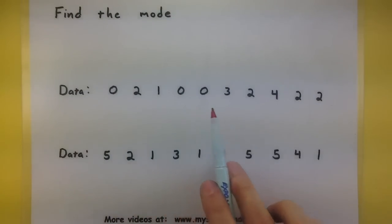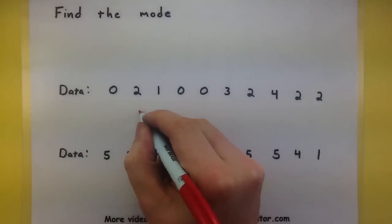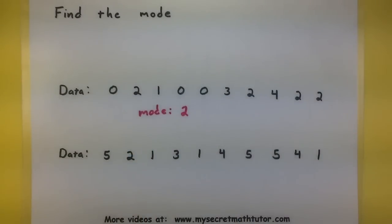And looking at the first set of data, we can see that zero shows up three times, one shows up once, three shows up once, and two shows up four times. So two is the most often, so I will say my mode is two.